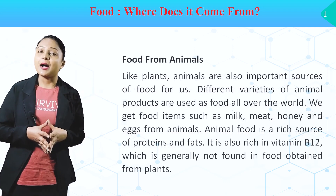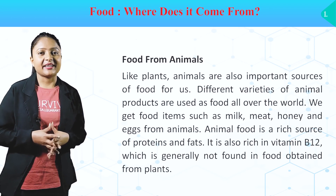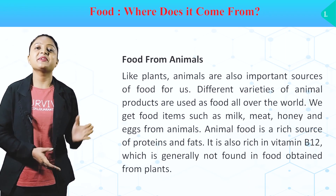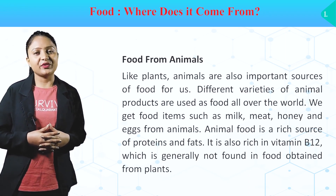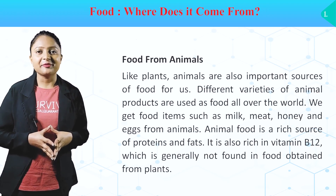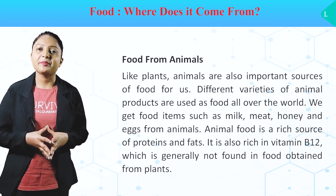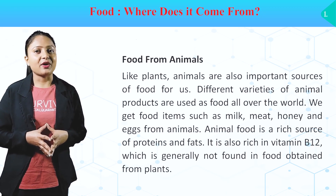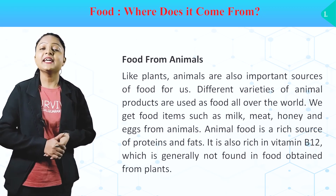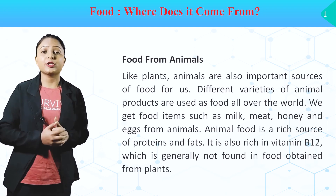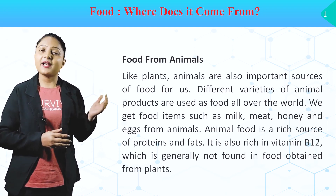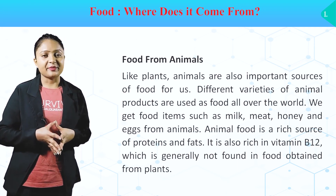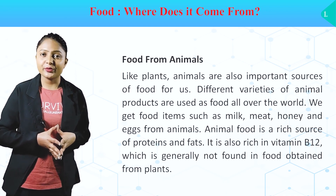Food from animals. Ab hum us food ke baare mein janenge jo humay animal se milta hai. Like plants, animals are also important sources of food for us. Different varieties of animal products are used as food all over the world. We get food items such as milk, meat, honey and eggs from animals. Animal food is a rich source of proteins and fats. It is also rich in vitamin B12, which is generally not found in food obtained from plants.